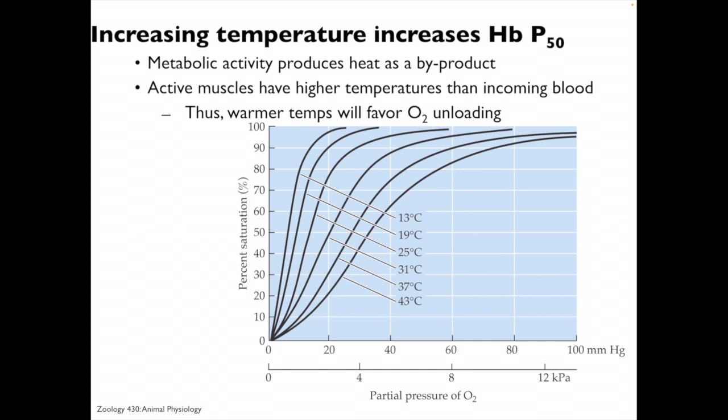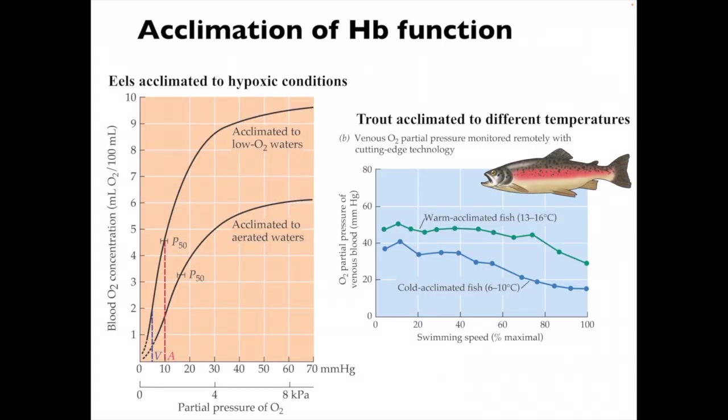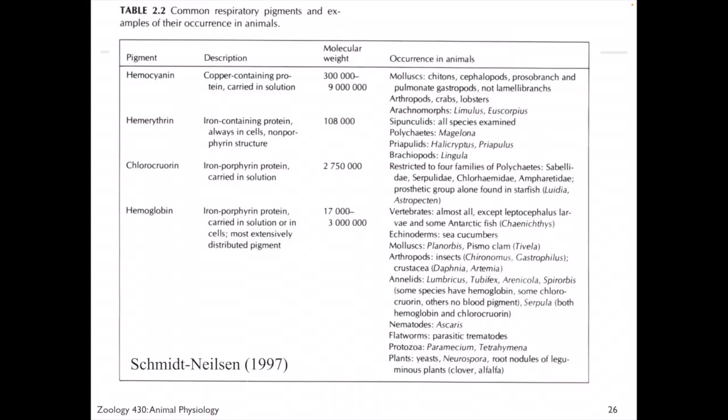Increasing temperature also shifts the curve to the right, which favors oxygen unloading — warmer temperatures favor unloading. Ventilation can alter blood chemistry, and hyper- and hypoventilation can get dangerous because plasma pH and bicarbonate levels are altered beyond normal ranges, potentially causing difficulty binding oxygen to hemoglobin. CO2 levels are also affected by diet through the respiratory quotient. Some animals can acclimate to hypoxic conditions, such as eels and trout. There are also a variety of hemoglobins that have evolved through evolutionary history, including hemocyanin, hemerythrin, and chlorocruorin, involving copper and iron.